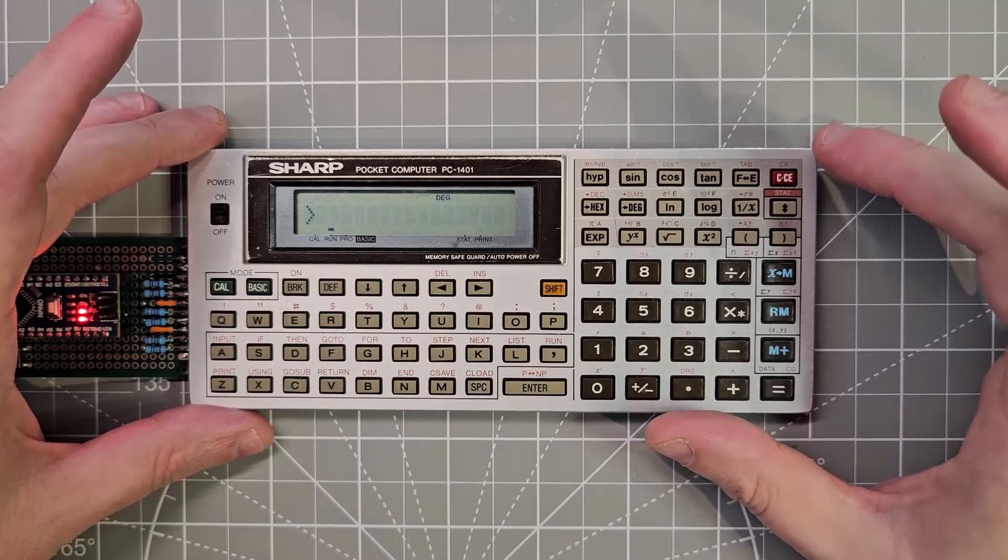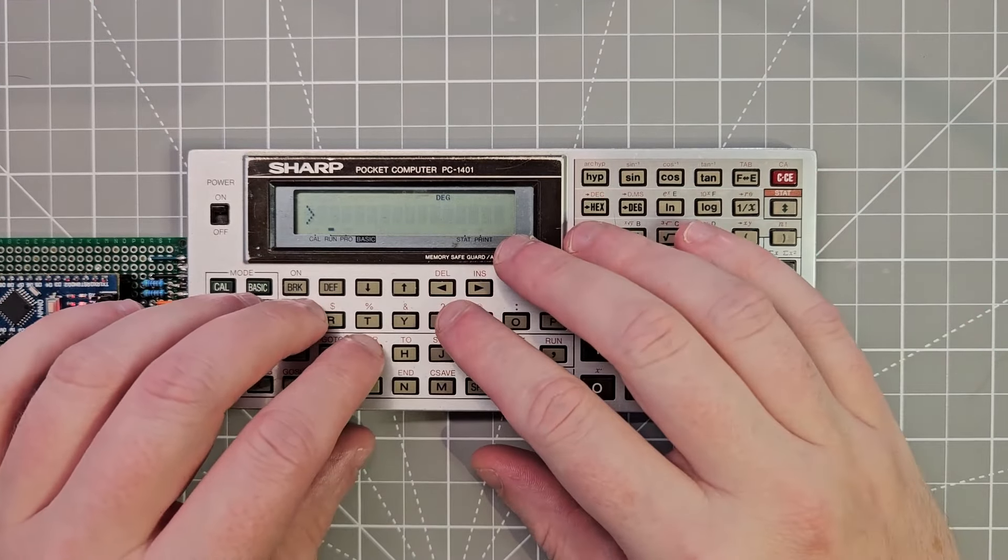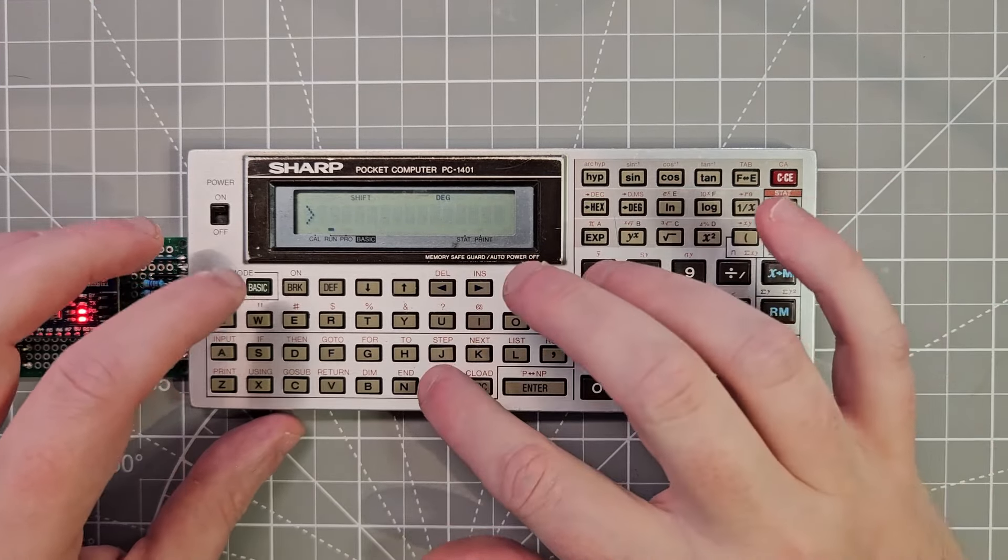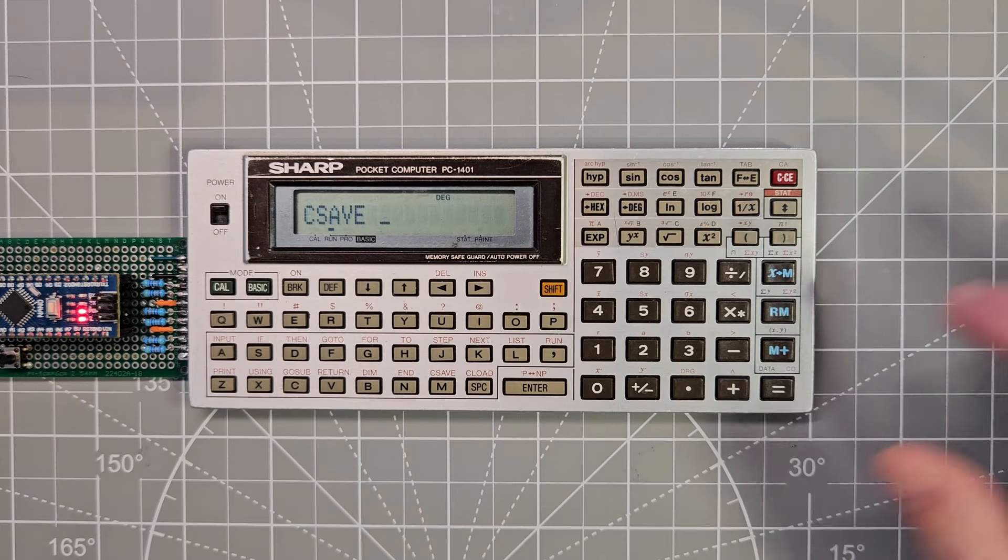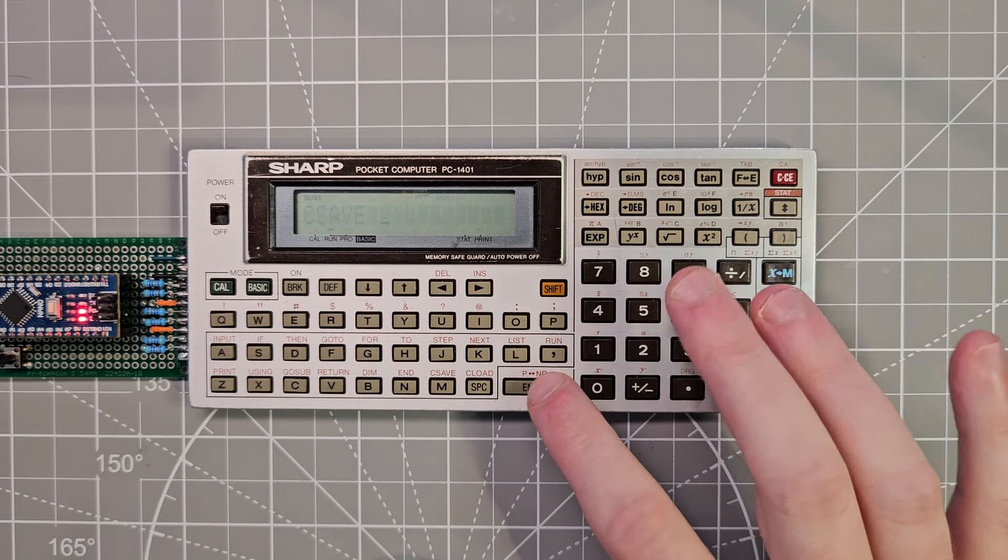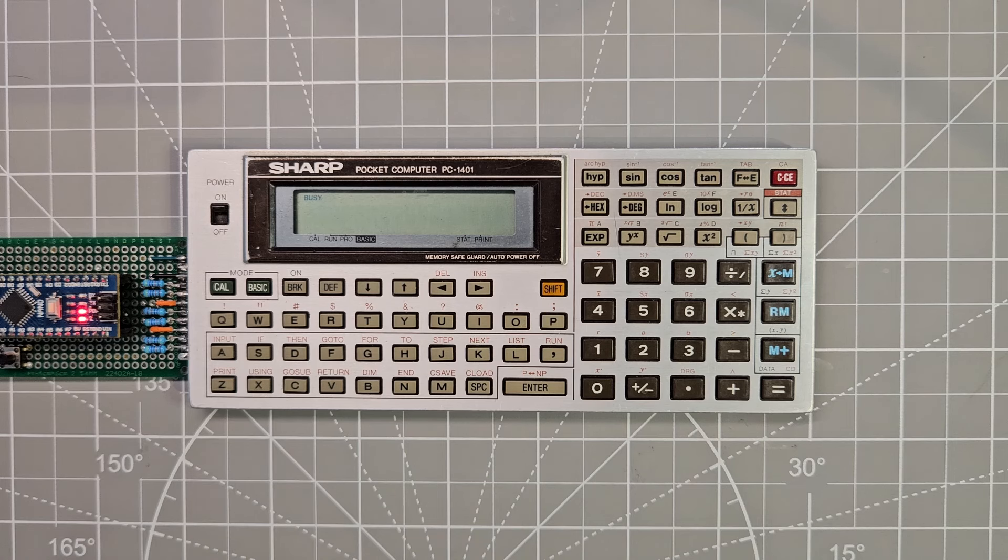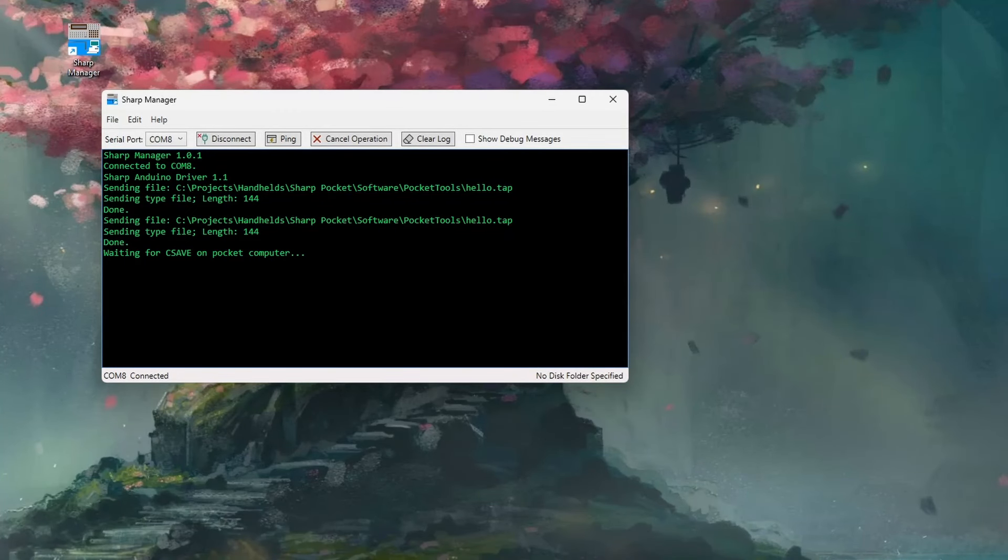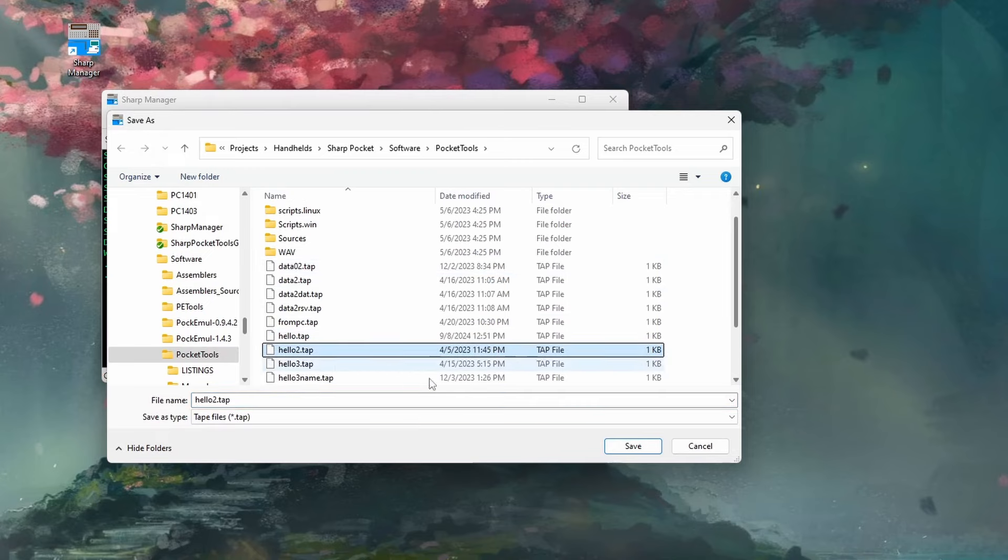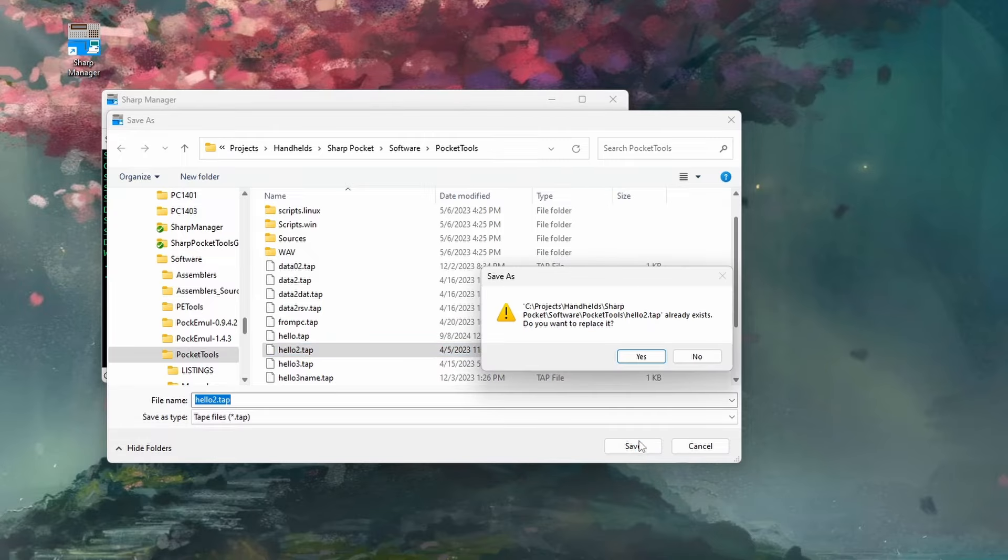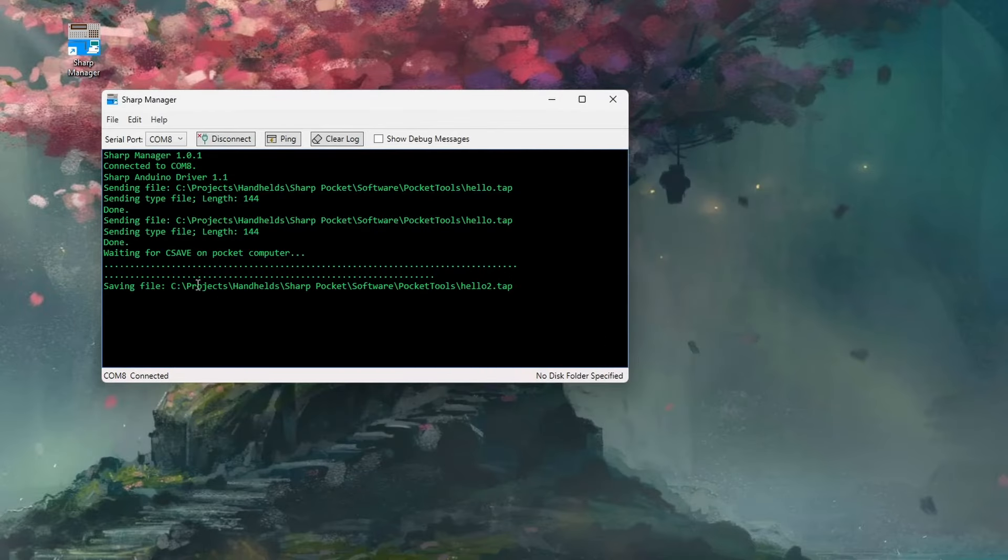And then we can actually take this file as well and save it. So we can do a C save. And now we'll go over to the Sharp Manager application and say we want to receive a tape file. And then we just hit C save on here. And then it'll ask us what file name we want to use for this. I'm just going to save it as an existing tape file and replace it.